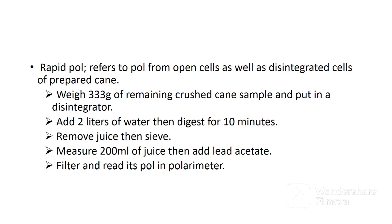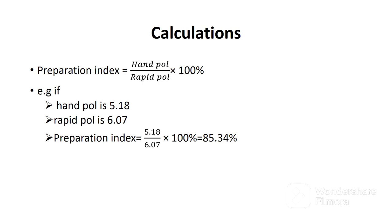The procedure for rapid pole is as follows: weigh 333 grams of the remaining crushed cane sample and put it in the disintegrator. Add 2 liters of water, then digest for 10 minutes. As the disintegrator shaft revolves, it opens the remaining cane cells holding sucrose and enables the sucrose to dissolve in the water added. Remove the juice from the disintegrator, then sieve. Measure 200 ml of juice, add lead acetate, stir, and filter using filter paper. Discard the first 25 ml of the filtrate, collect the remaining filtrate, and read the pole using the polarimeter.